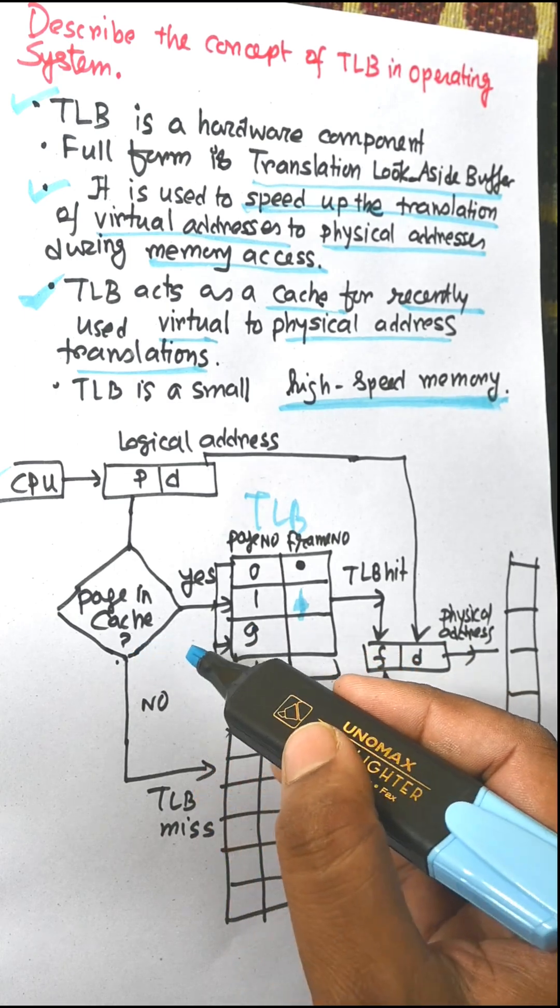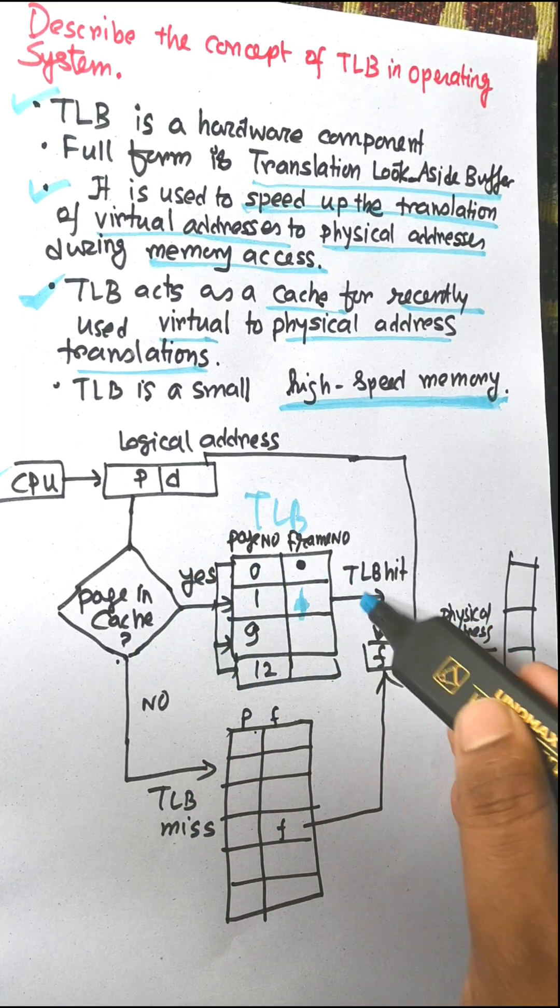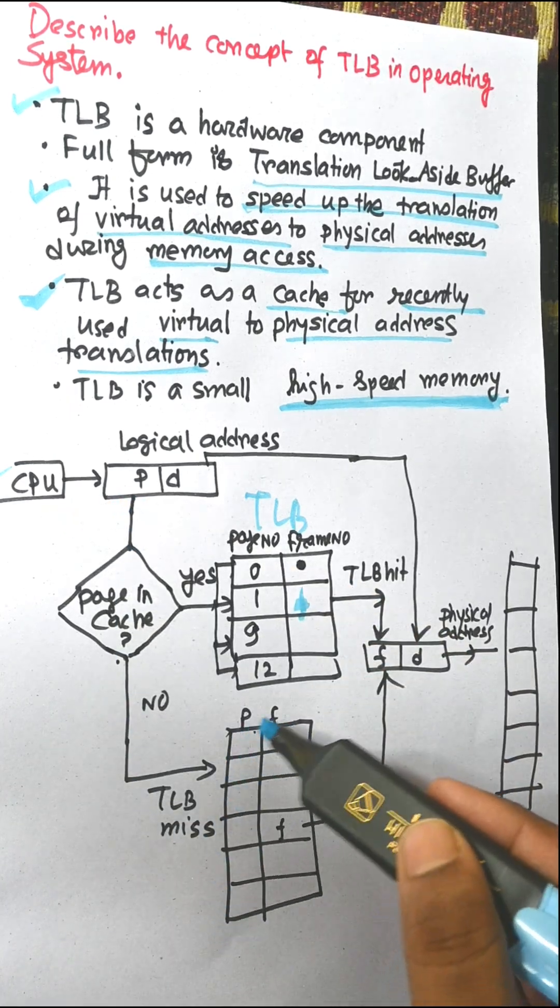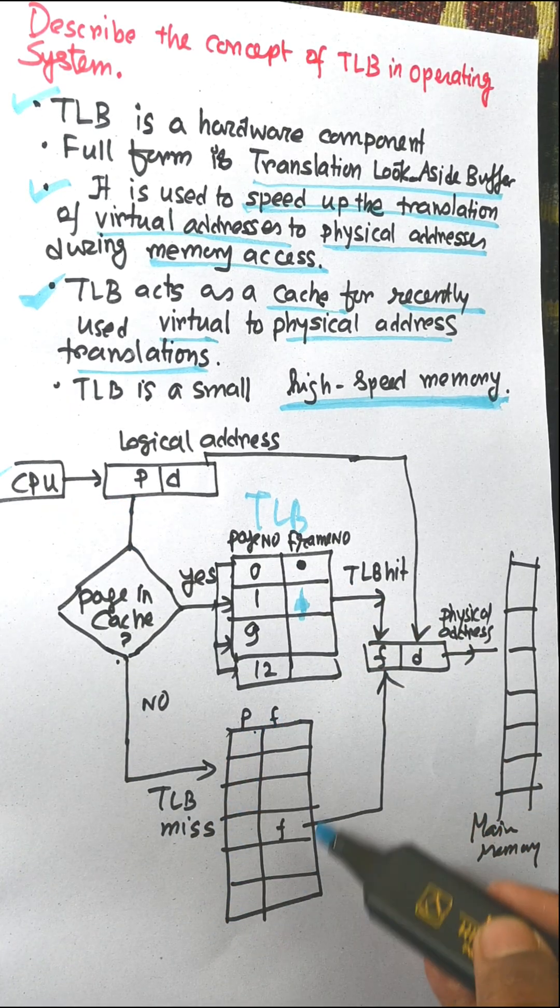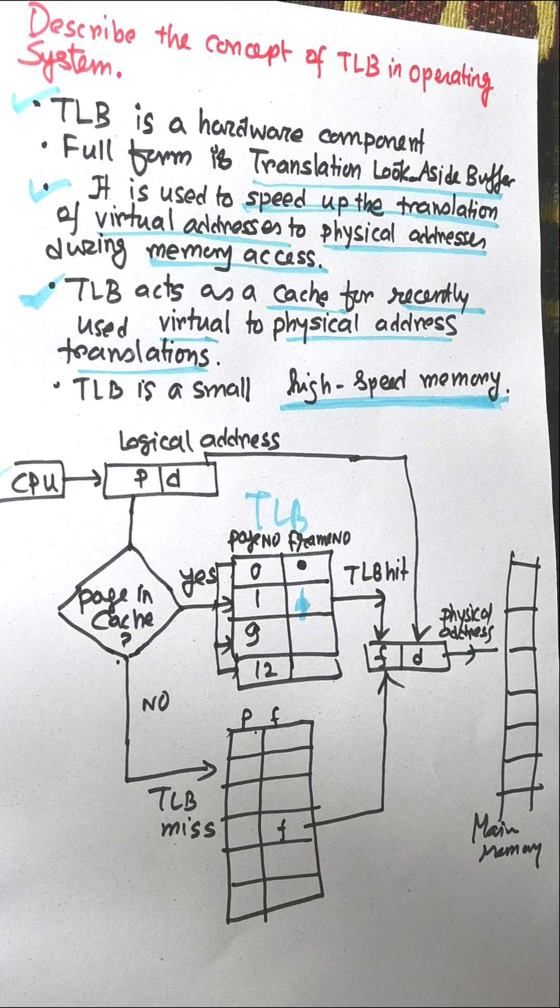In TLB hit we directly access the page as it is a faster access mechanism. During miss it will search the page table again and we will get the frame number. So this is the technology of TLB.